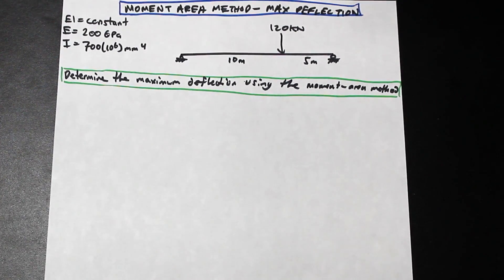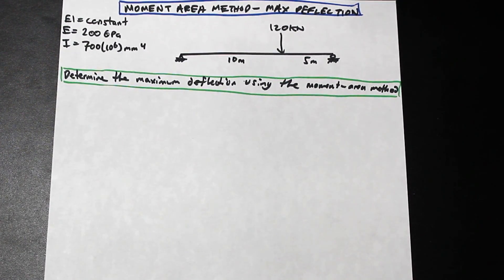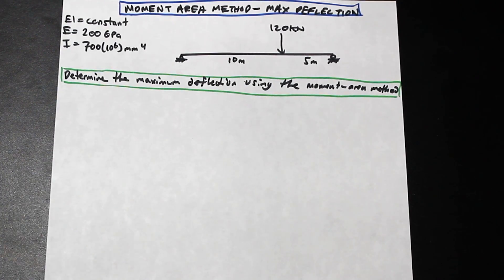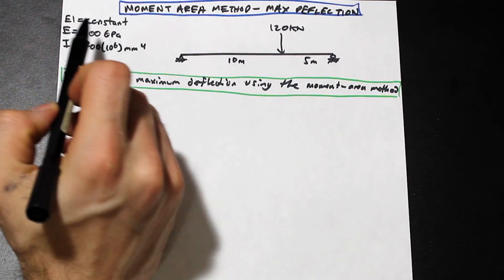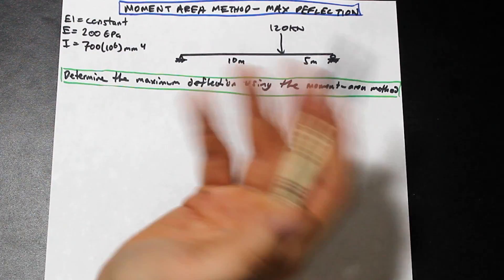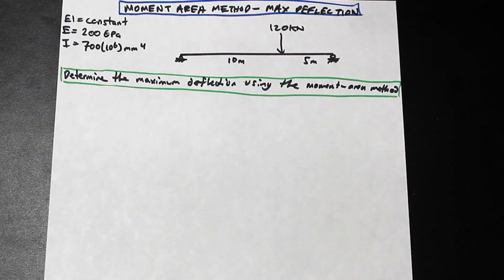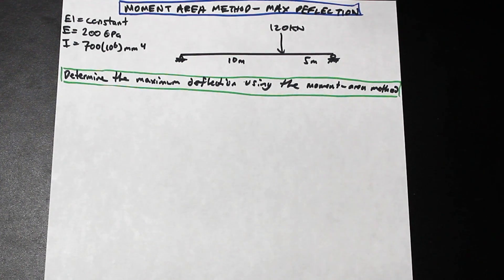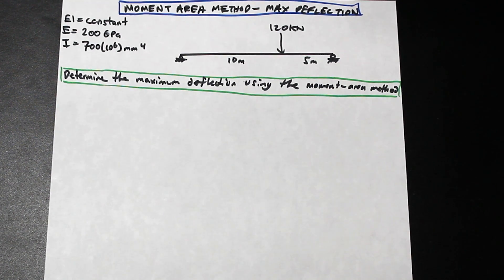Hey everyone, welcome back. Fred here, AF Math and Engineering. Our video today is on the moment area method. We're going to find the max deflection using the moment area method. We're given a simply supported beam, EI is constant, E is 200 GPa. This is a bit of a tricky question, but as long as you know how to approach it, it's not a problem — very common exam question because it requires a little bit of thinking.